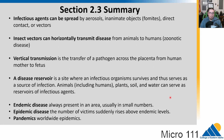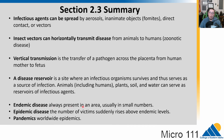In summary: infectious microbes can be spread in many ways. Insect vectors can horizontally transmit diseases from animals to humans — a zoonotic disease. Vertical transmission moves the pathogen from parent to offspring, usually from mother to fetus. Disease reservoirs are where pathogens hang out when not infecting us. Endemic diseases are always present in an area, usually at low numbers. An epidemic is when cases ramp up in a community, and a pandemic is when that spreads worldwide. That's it for 2.3.